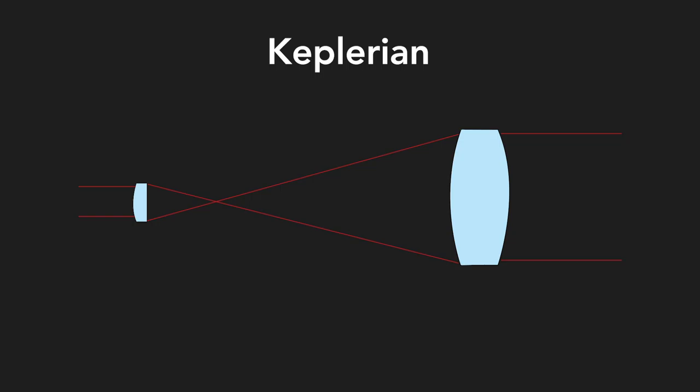Keplerian beam expanders are ideal for lower power applications, because the internal focal point can be used as an ideal position for a spatial filter, allowing for an easy and effective beam cleanup.